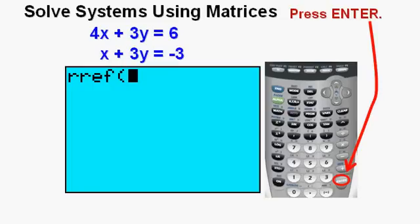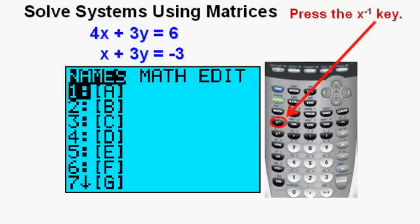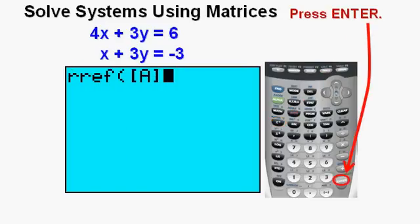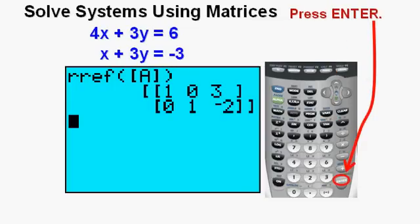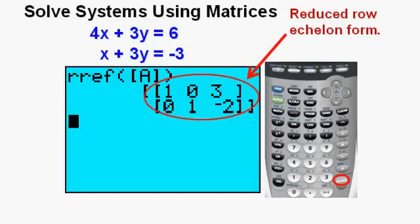Now we enter matrix A by pressing second, then the x to the negative 1 key again on the left for matrix. We are in the matrix names submenu and A is already highlighted. Press enter. Now we press the closing parentheses. Press enter.